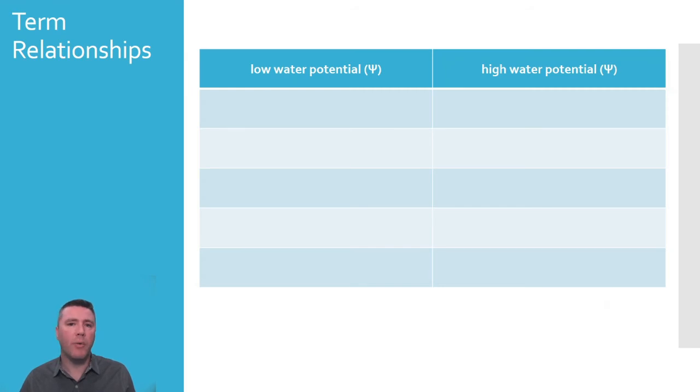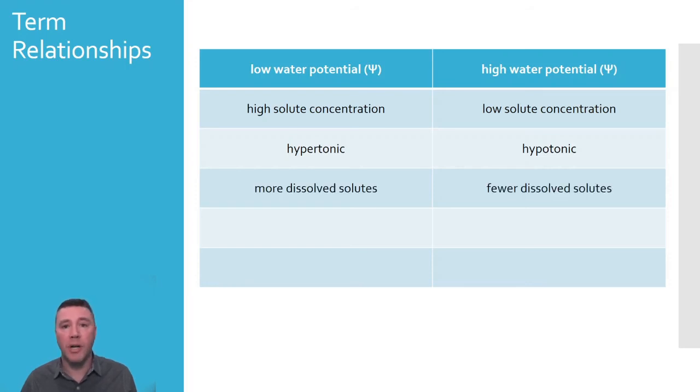Here's a table that will help to relate some terminology and phrases. Associated with low water potential would be a high solute concentration, whereas high water potential is a lower solute concentration. More solutes means a solution that is hypertonic. Fewer solutes, hypotonic. A higher osmolarity, or osmotic concentration, is related to being hypertonic, and the opposite is true for a hypotonic solution.